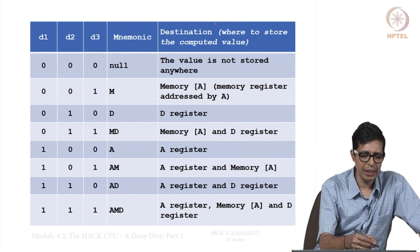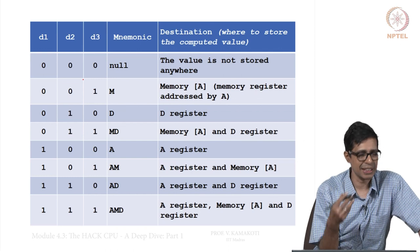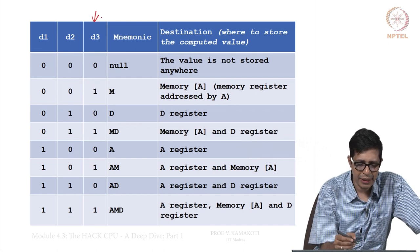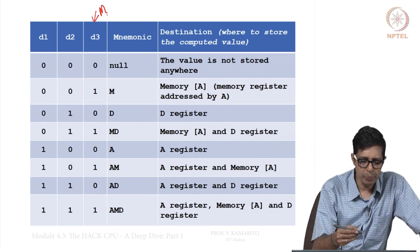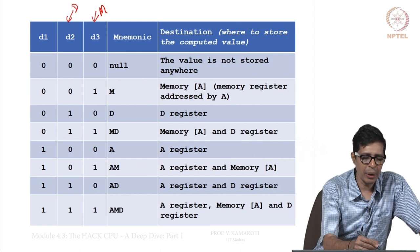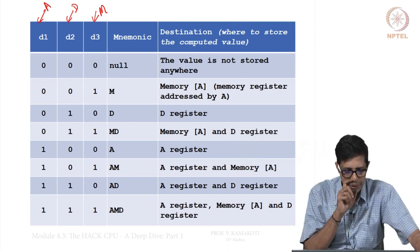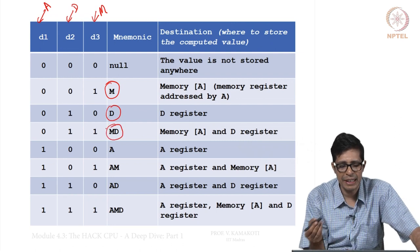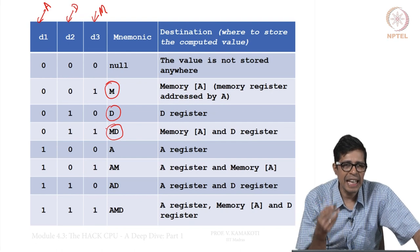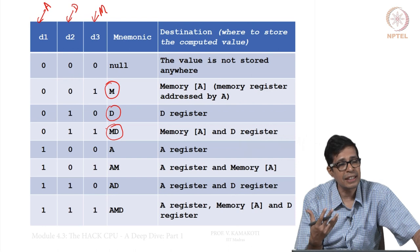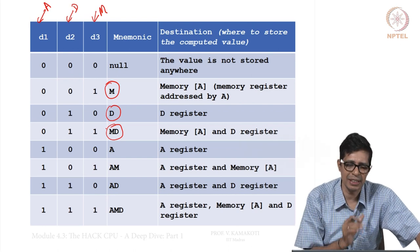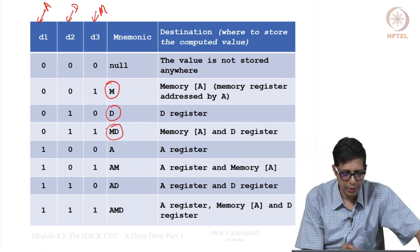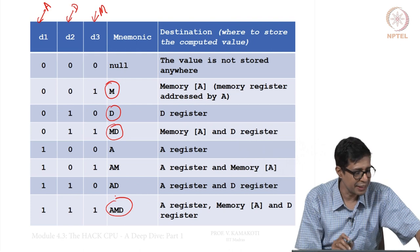Now the destination bits: if D1, D2, D3 are all zeros then there is no destination — this is likely a jump instruction. When D3 bit is 1, the destination is memory. When D2 bit is 1, the destination is the D register. When D1 bit is 1, the destination is the A register. So 001 means destination is memory, 010 is D register, 011 is both memory and D register. M refers to the memory location whose address is stored in the A register.